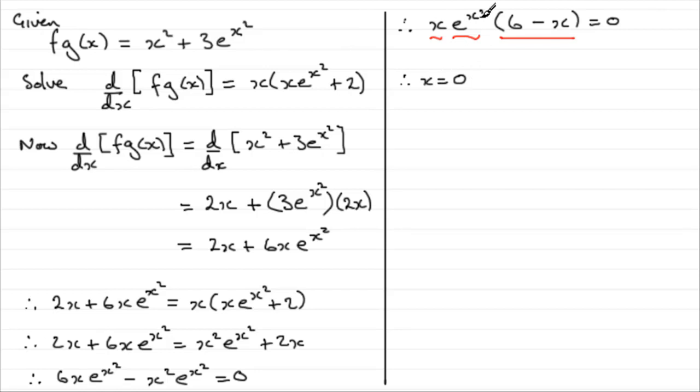Now, e to the x squared can never equal 0. If you remember the graph of e to the x squared, an exponential graph, it's going to be something like this. Let me just show you. If we have our x axis, and let's say y equaled e to the x squared, it would be a graph that goes like this. It goes up, passes through 1 on the y axis. It can never be 0. It never crosses the x axis. So, essentially, e to the x squared can never equal 0. I would have just left it as x equals 0.